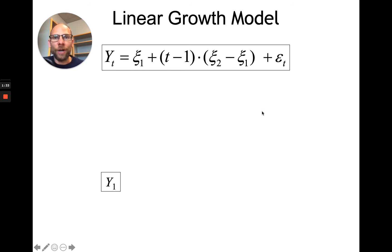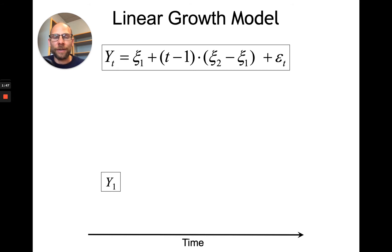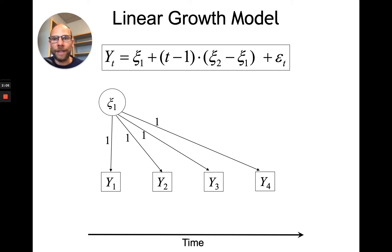What would this look like for four measurement occasions that are equally spaced in time? We have y1 — the measured variable, for example IQ scores at time one — and then we repeatedly observe the same variable y on four equally spaced measurement occasions: y2, y3, and y4. In this model, all of these variables load onto the intercept factor xi1 with a loading of one. These loadings are fixed to one because the equation does not have an estimated factor loading, so you have to take that into account when specifying this model in Mplus.